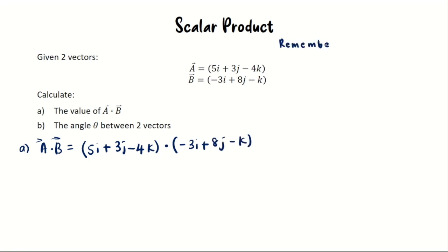Remember that i · i will equal to 1, j · j will equal to 1, and k · k will equal to 1, but other than this it will all equal to 0. So the final answer for the scalar product will be negative 5 plus 24 plus 4, that is 13.